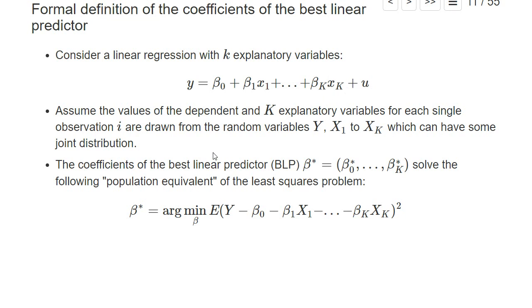But you don't have to dig into detail, but that's how you could also define these coefficients of the best linear predictor and that's why they're called in this way, as a population equivalent of the least squares problem. And our OLS estimator beta hat basically converges against these beta stars.